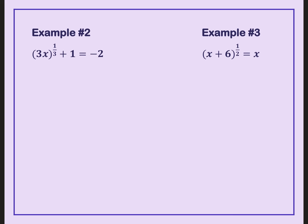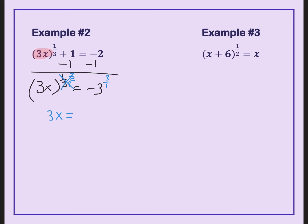Let's try again. Remember, we need to isolate whatever is being raised to that rational exponent. First I'm going to subtract 1 from both sides. Now that I have isolated it, I can multiply that exponent by the reciprocal. But if I multiply it on one side, I must multiply it on the other. I now have negative 3 to the third power, which is negative 27. Divide both sides by 3, and our final answer is x equals negative 9.